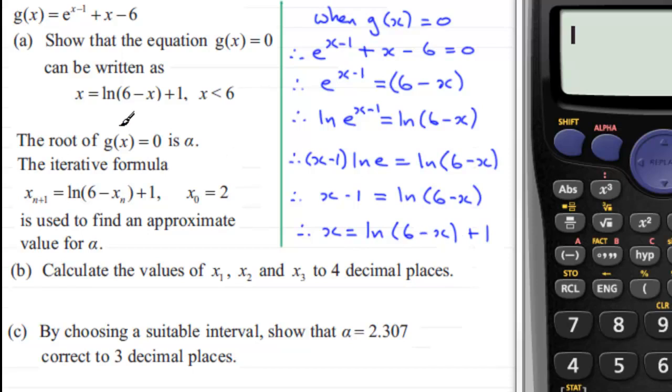Now we go on to the next bit. We're told that the root of g(x) equals 0 is α. In other words, the solution to our equation is x equals α.